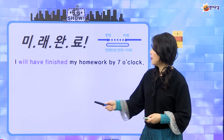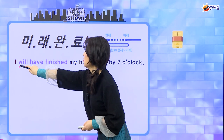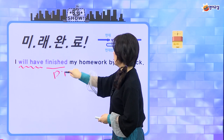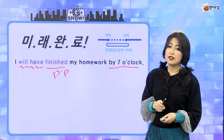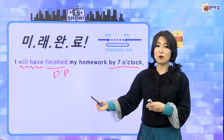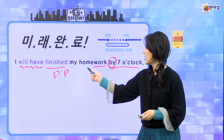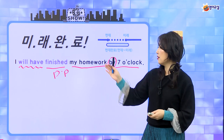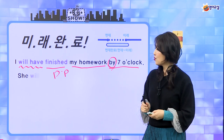예문을 볼게요. 'I will have finished my homework by 7 o'clock.' will have PP예요. 7 o'clock은 지금 이후에 오는 7시겠죠? 7시까지 나의 숙제를 끝낼 거야, 이런 얘기예요. 그래서 'I will have finished my homework by 7 o'clock' 이런 식으로 얘기할 수 있어요.